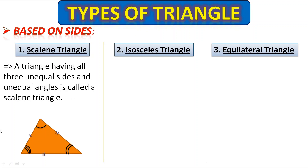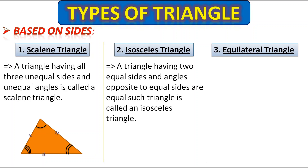This triangle is a scalene triangle because all three sides are unequal and all three angles are unequal. So it is called a scalene triangle. Next comes the isosceles triangle. A triangle having two equal sides, and angles opposite to the equal sides are also equal — such a triangle is called an isosceles triangle. Here these two sides are equal and the two angles opposite to the equal sides are also equal.